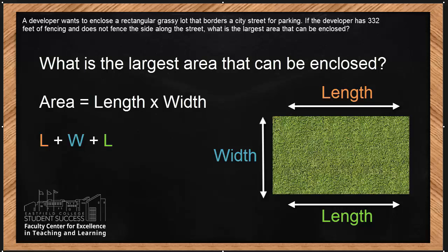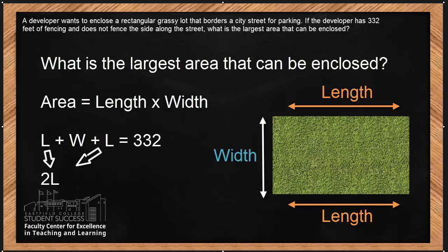notice we do not want to enclose this side. So three sides together, the sum will be 332. But if these two sides are the same, then I can combine like terms. L plus L is 2L plus W equals 332.